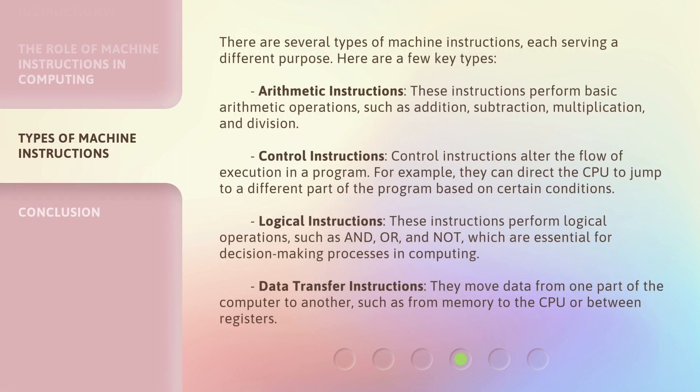There are several types of machine instructions, each serving a different purpose. Here are a few key types. Arithmetic instructions. These instructions perform basic arithmetic operations, such as addition, subtraction, multiplication, and division.